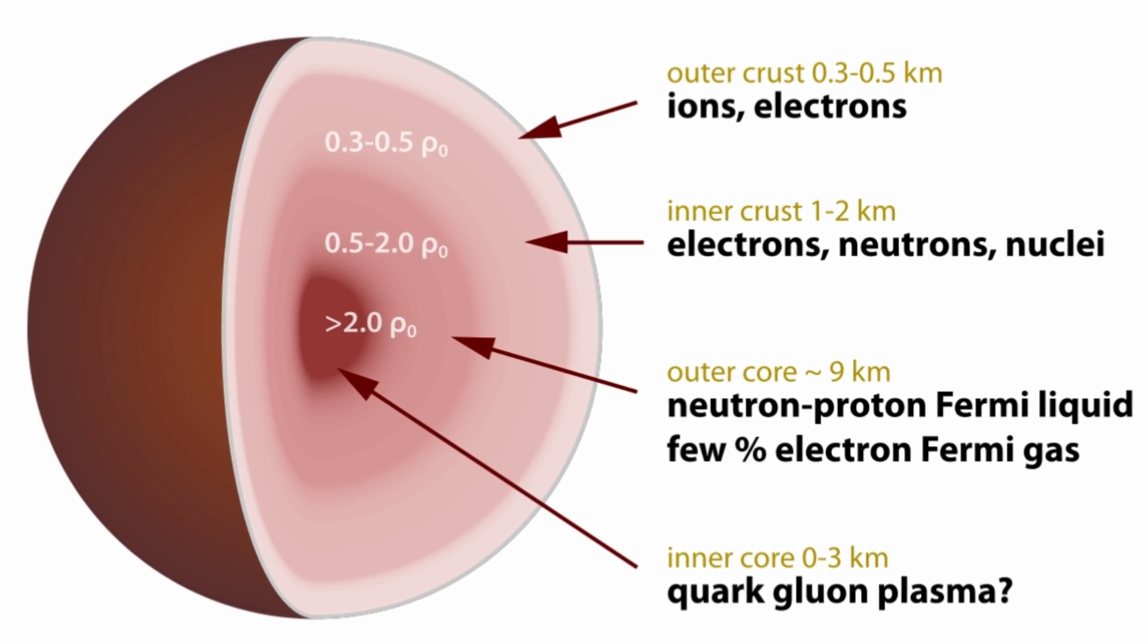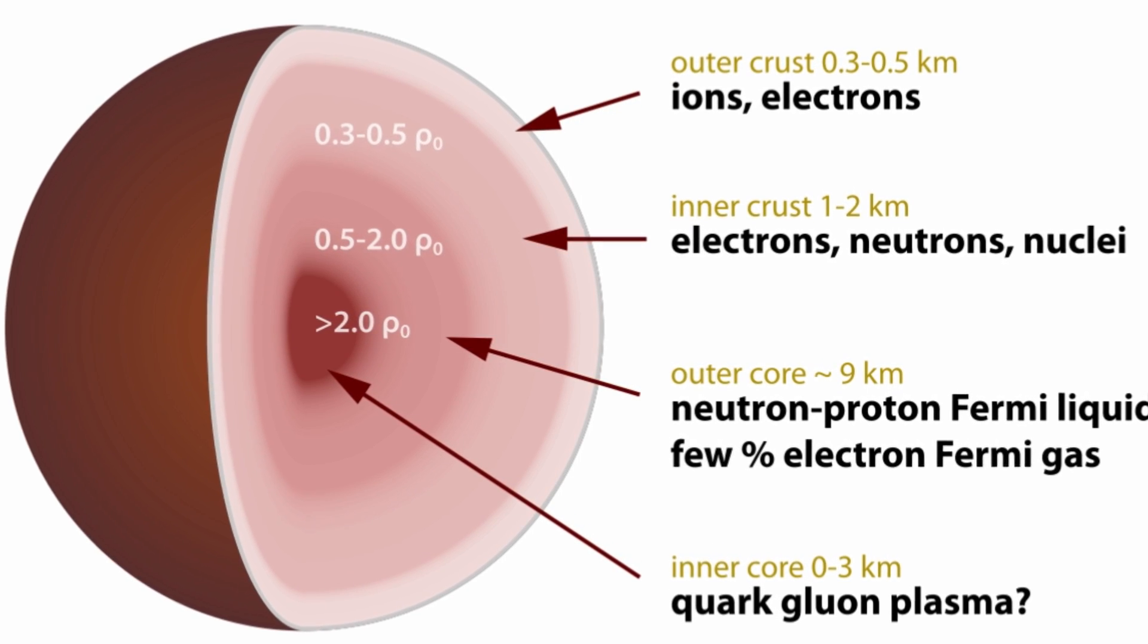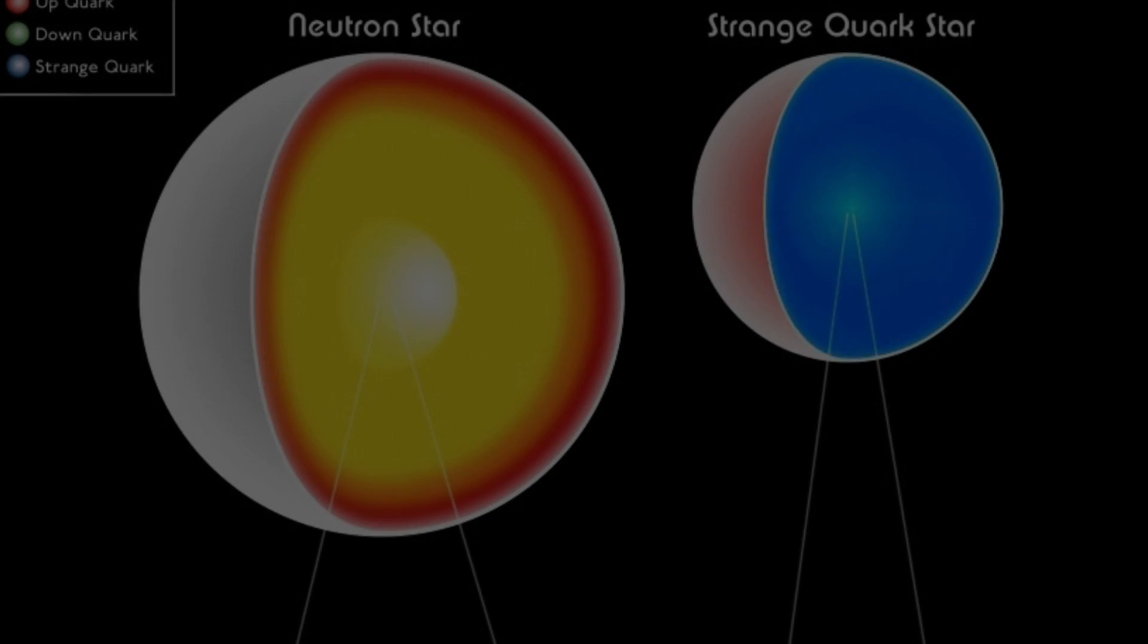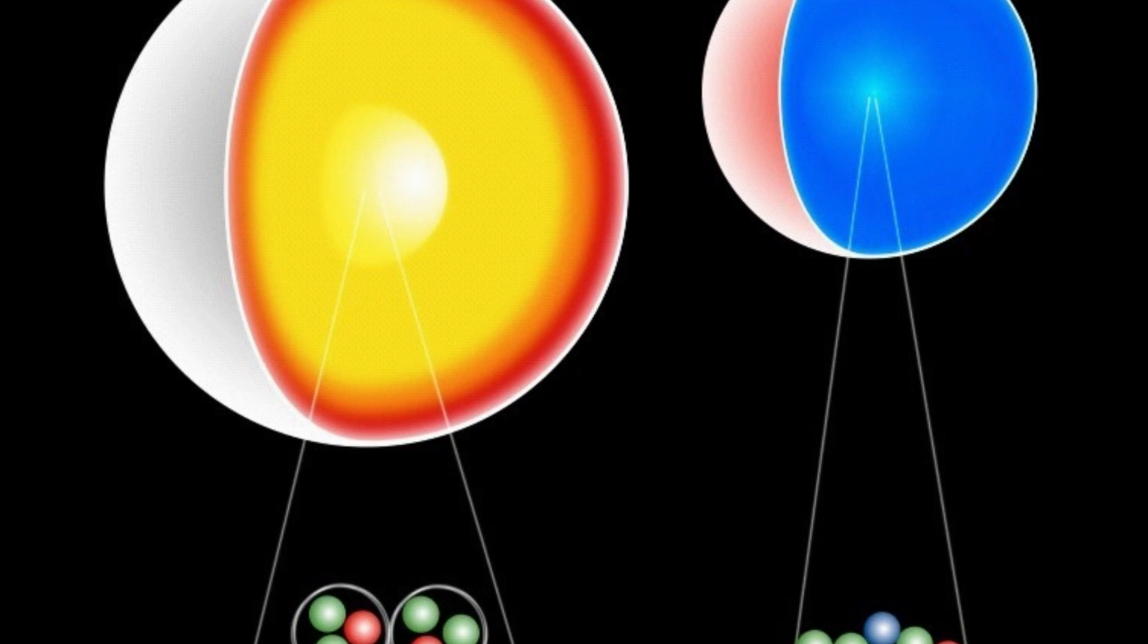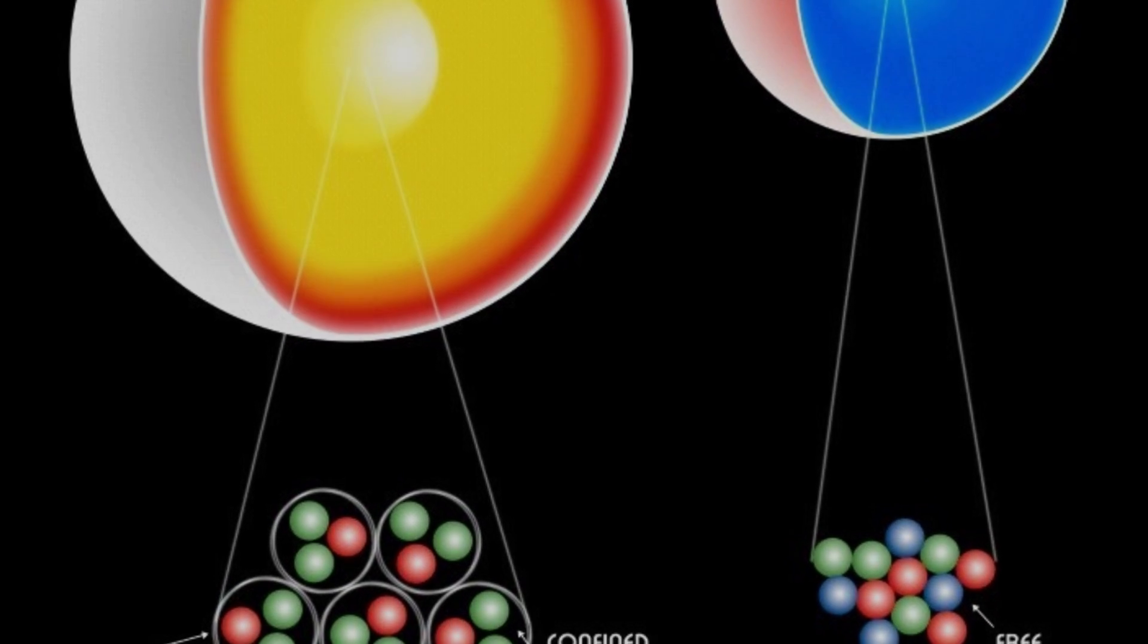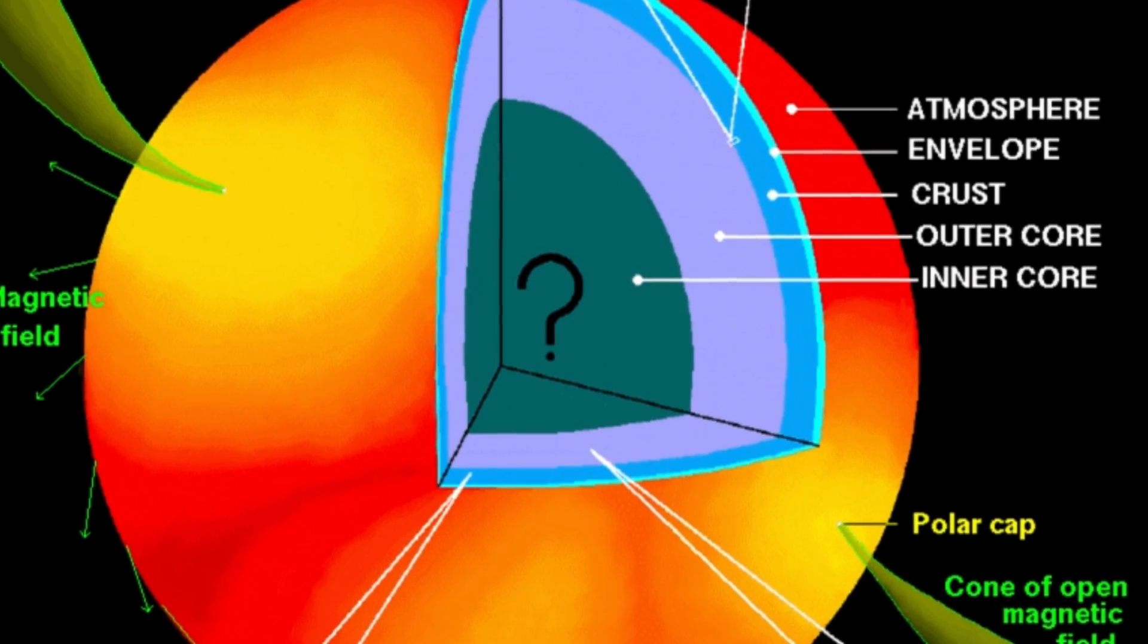Neutron stars are made up of several layers. The outermost zone is known as the crust. It's made up of the outer crust and the inner crust, and the whole thing stretches about a kilometer down from the surface.